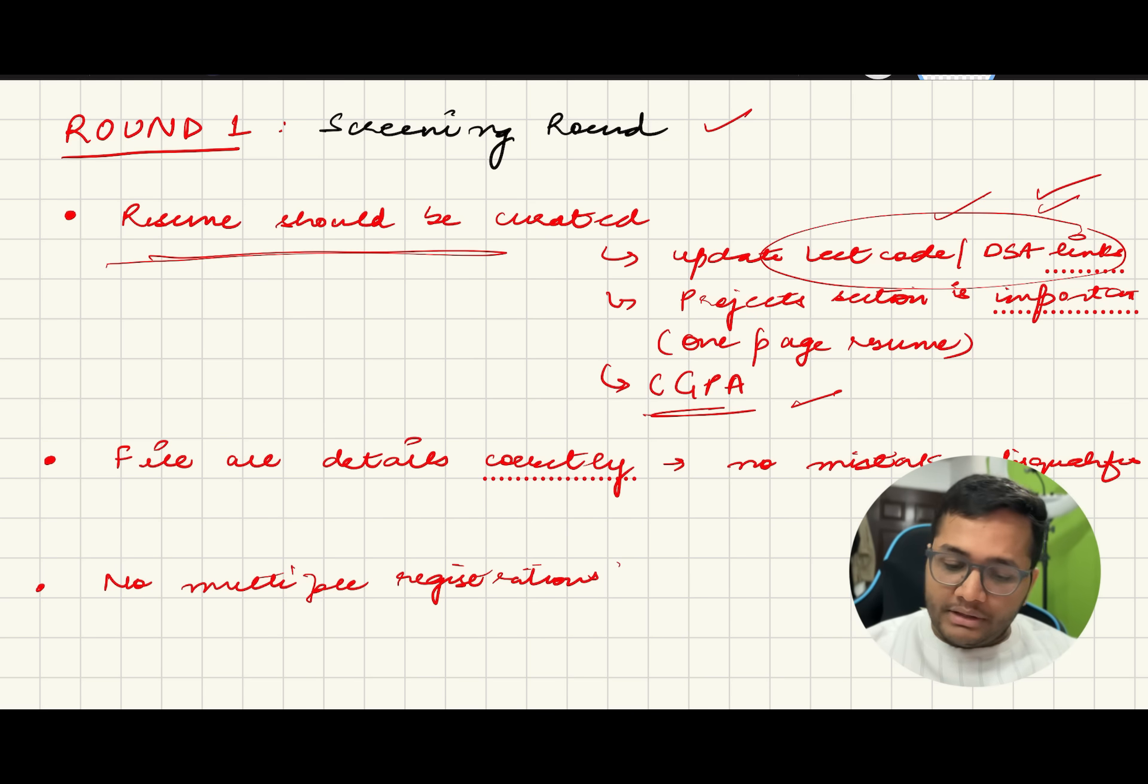CGPA is an important factor which will show your academic qualification because many of the first year, second year students who would be participating, you don't have anything else to show but your CGPA and your personal projects. If you have some extra-curricular activities, you have participated in hackathons before, those are worth mentioning. Make sure you fill in the details correctly. Don't do multiple registrations. Your profile can be blacklisted from the company if you're registering twice using the same name or phone number. Make sure you register only once.